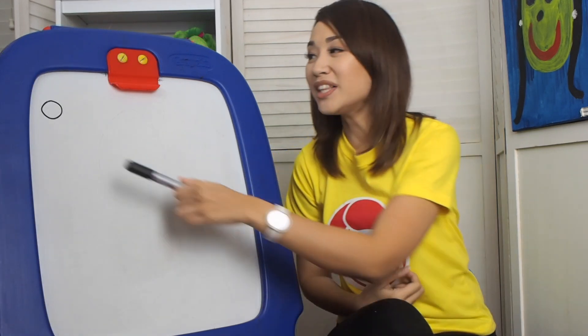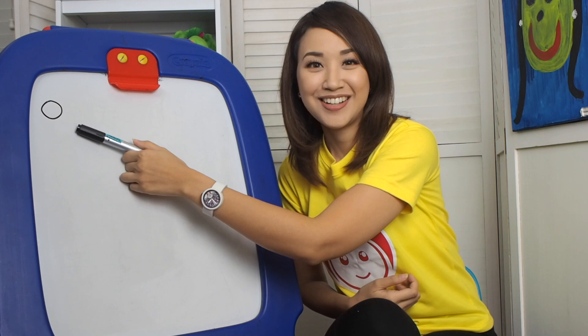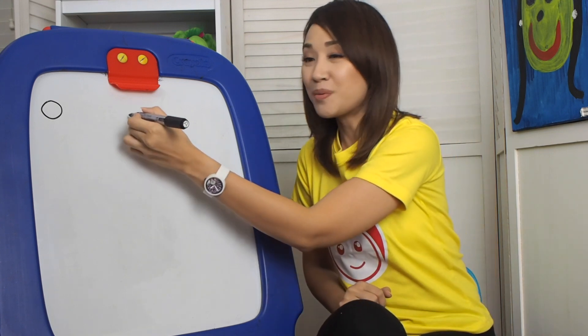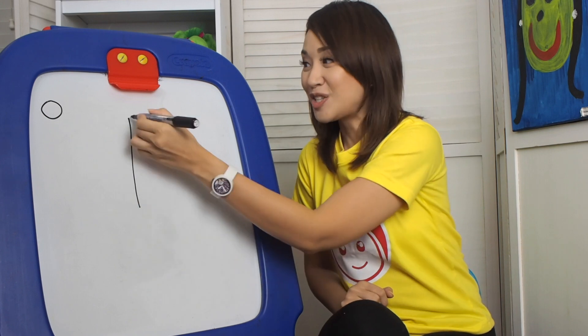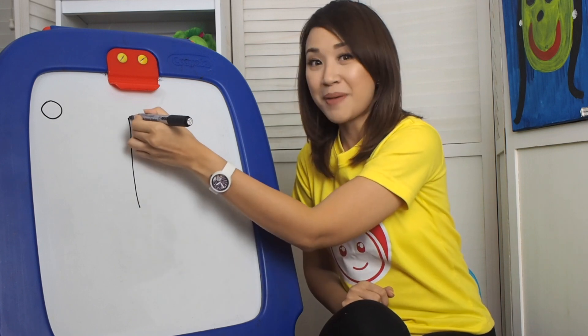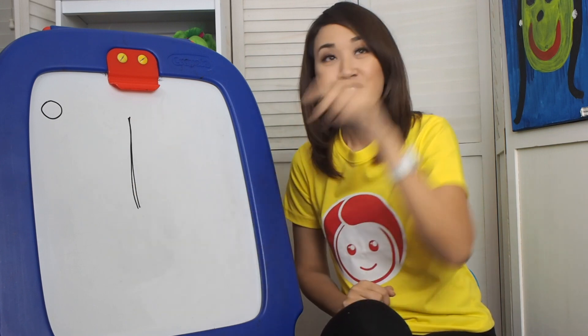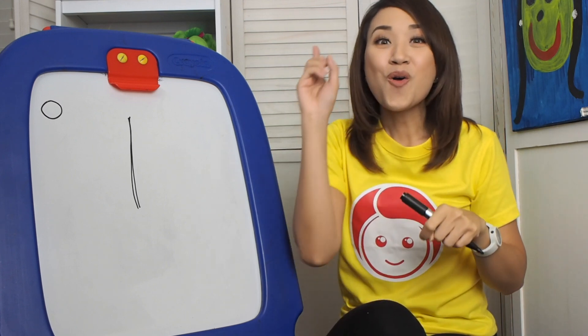Very good. What is after number zero? Very good — number one. So how do we write number one? Start from the top and then go down to make the number one.